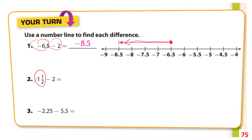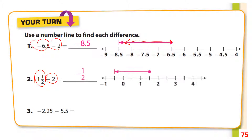On number two, you start at one and a half on the number line and move to the left two spaces. Moving one space then another gets you to negative one half.